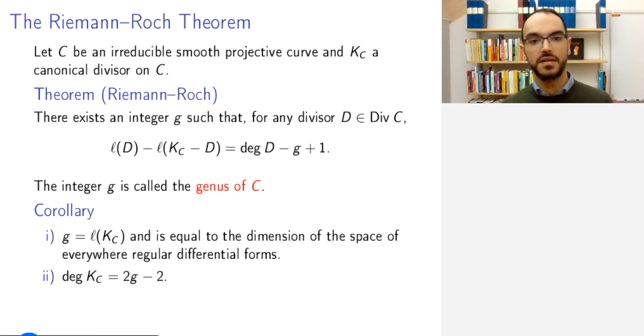Finally, the degree of K_C is equal to 2g - 2. So, now we know the degree of this canonical divisor. And I will let you prove this by setting D equals K_C this time and applying the Riemann-Roch theorem.